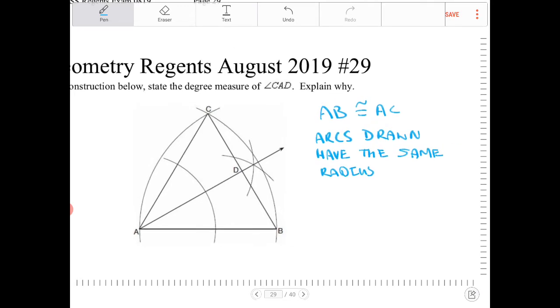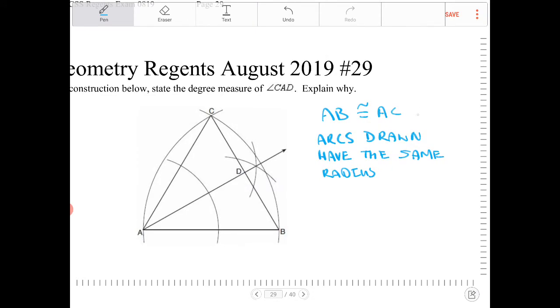And the same thing could be said about AB being congruent to BC. Therefore, triangle ABC is an equilateral triangle.